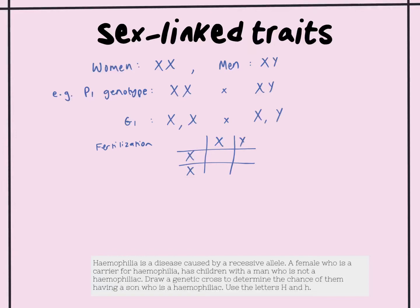The inheritance of sex-linked traits is one of the questions that can often trip you up, because the first thing you need to understand is the chromosomes that make up a biological male and a biological female. A woman has XX — two X chromosomes — and a man has one X and one Y chromosome. The Y chromosome is a lot smaller than the X chromosome, which means it physically holds fewer genes.